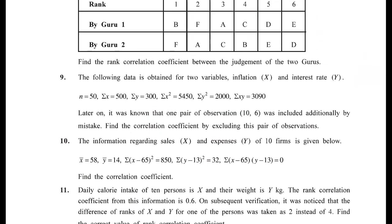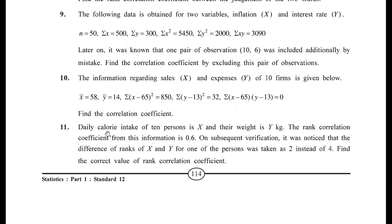Section F, Sum 11: daily calorie intake of 10 persons (n=10) and their weight. Rank correlation coefficient is 0.6 (wrong R). On verification, difference in rank of one pair was taken as 2 instead of 4 (wrong D=2, correct D=4). Apply the same three steps to find correct R.